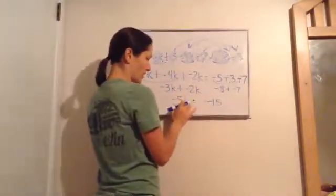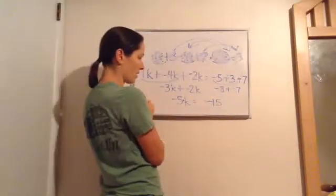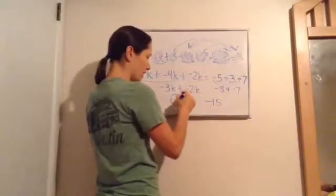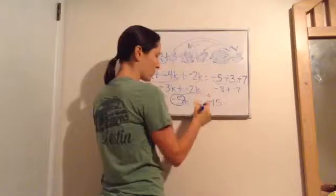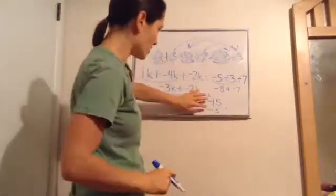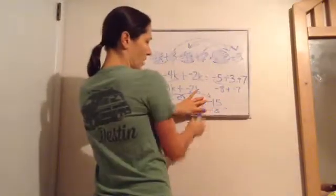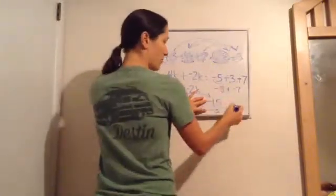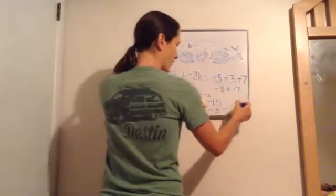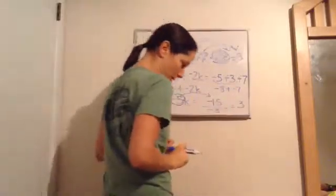We're trying to get the K by itself. Negative 5 times K — we want to get the K by itself, so we take this times negative 5 and when we move it across the equal side, we divide by negative 5. When you're dividing two negatives, because there's an even number, it's going to be a positive answer. 15 divided by 5 is 3, so this becomes a positive 3 — just 3.